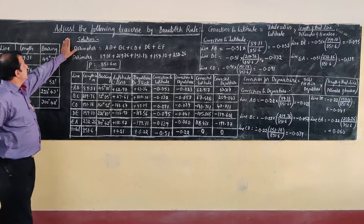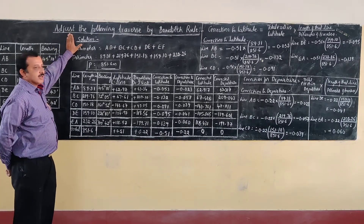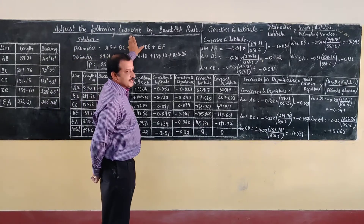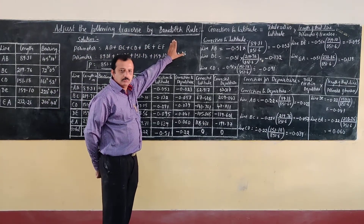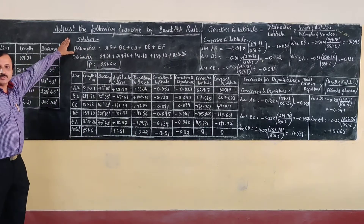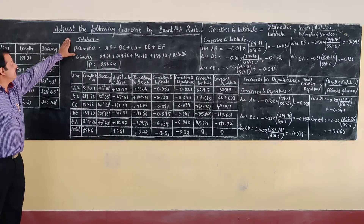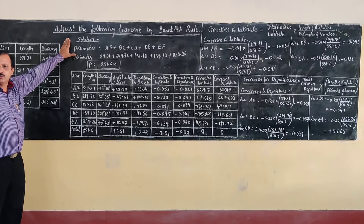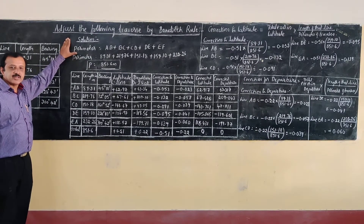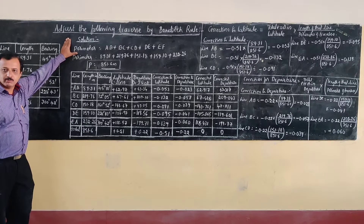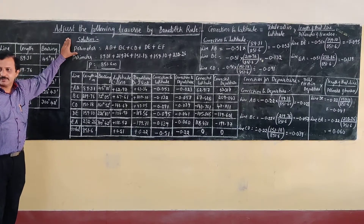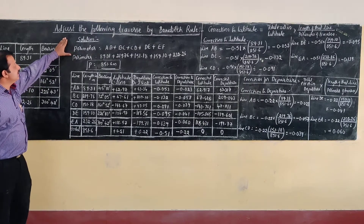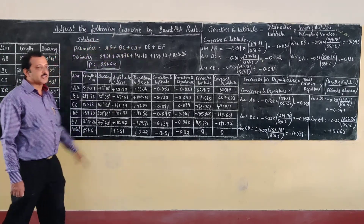Today we will be discussing problems related to adjustment of traverses by the Bowditch method. The problem given is to adjust the following traverse by the Bowditch method. There are two methods for adjustment of traverses: one is the Bowditch method, and the other is the transit rule method.